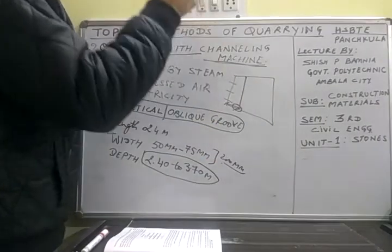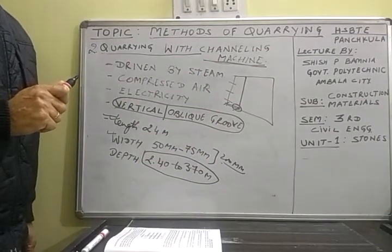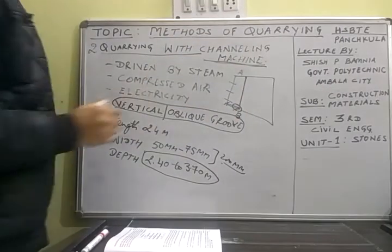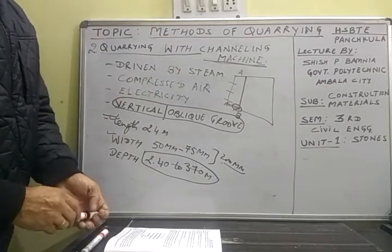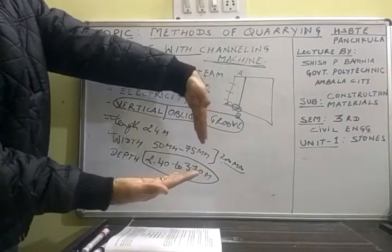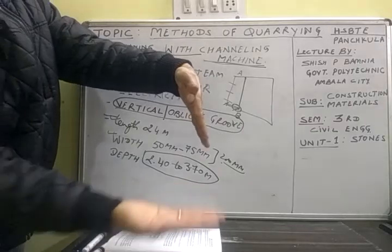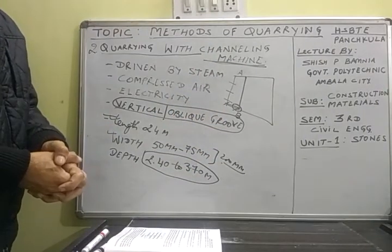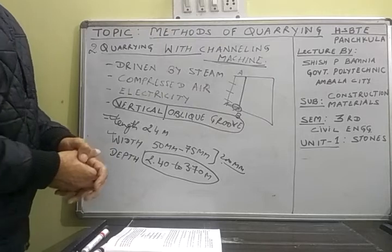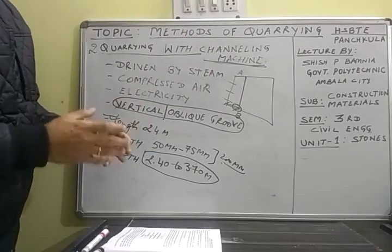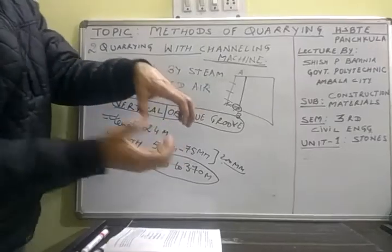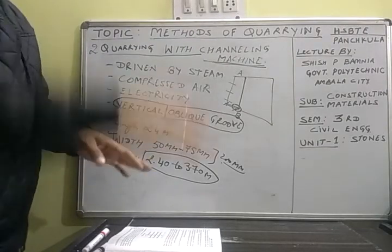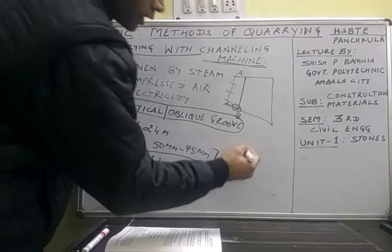There are two blades: one running in the vertical direction downward, and one running in the horizontal direction from point A to B or B to A. The two blades run together — one blade makes a vertical plane cut, and the other blade makes a horizontal plane cut. With the help of these channeling machines, channeling is done on the right-hand side.